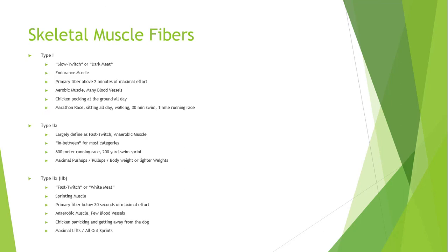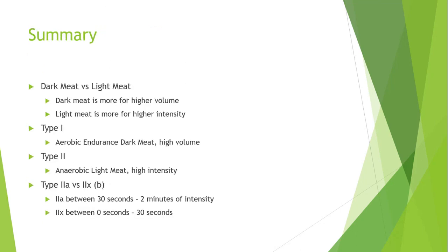So this is how it's broken out: Type 1, Type 2A, Type 2X, with their categorizations. Think about how it progresses from the endurance of Type 1 to the maximal efforts of Type 2X. In summary: dark meat versus light meat. Dark meat — Type 1 — is used for higher volume. Light meat is used for more intensity: higher speeds, heavier weights.